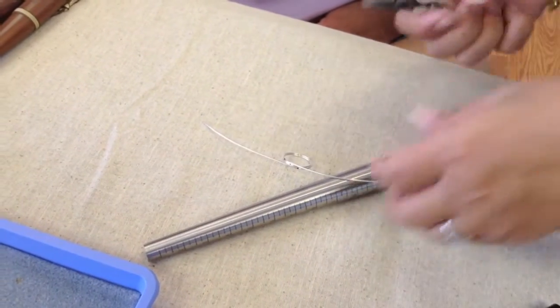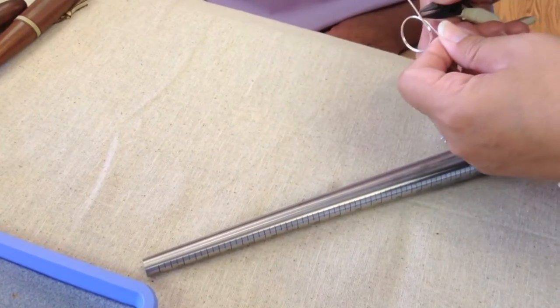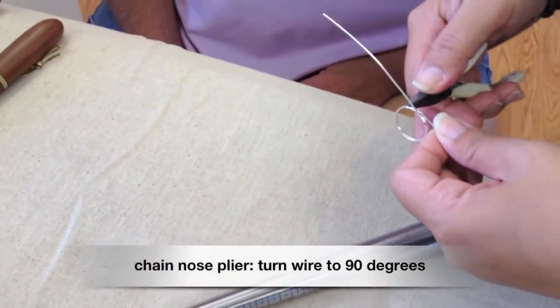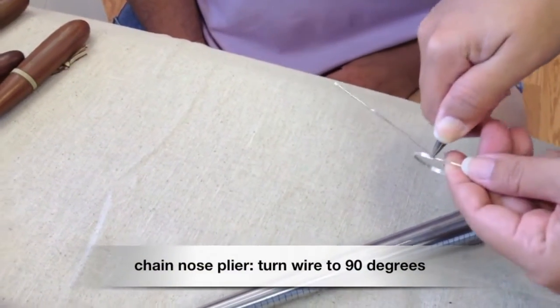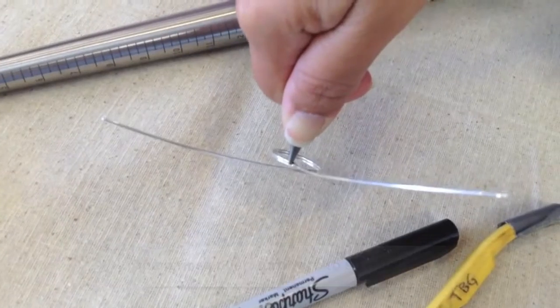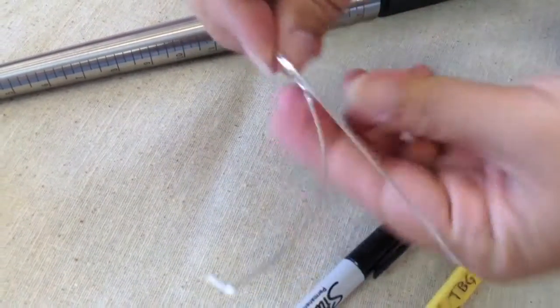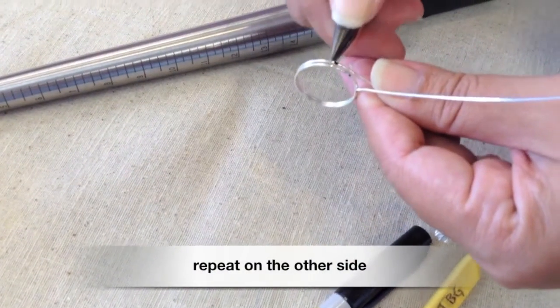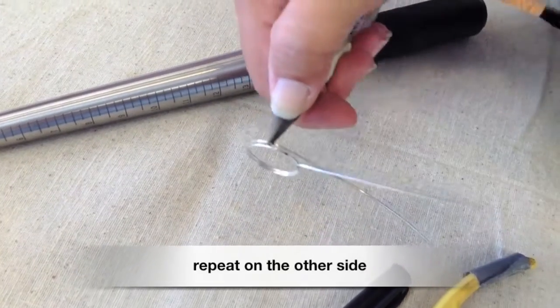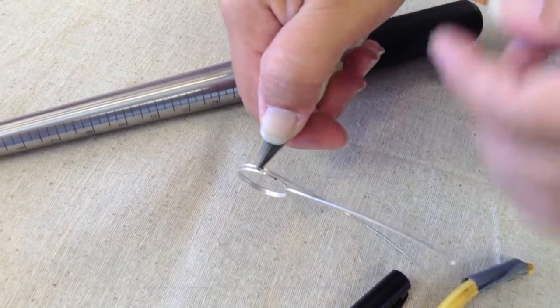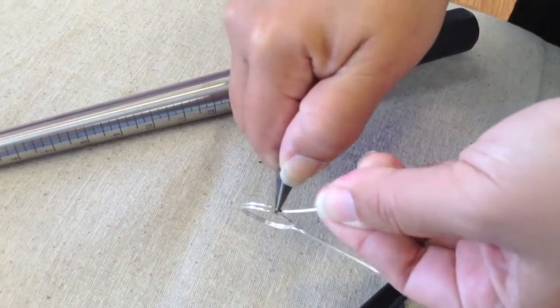Now get your chain nose pliers and you'll pinch on one of the black dots on the outer ring of wire and you'll take that long piece of wire and pull it up to a 90 degree angle. Repeat on the other side, making sure that you're exactly on the black dot when the wire goes up to that 90 degree angle.